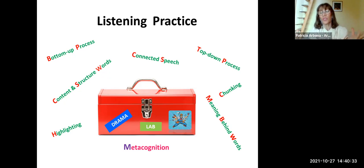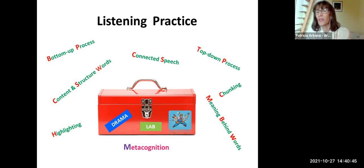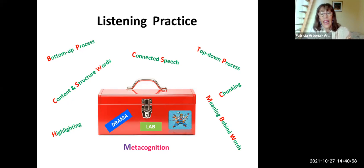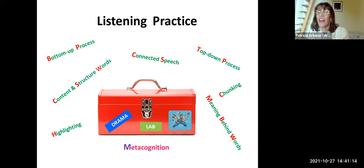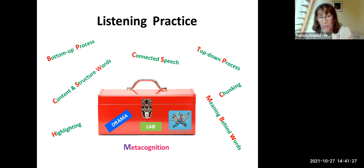When using drama, the classroom becomes a laboratory where students experiment with language — there is a lot of trial and error. Mistakes are welcome because students need to know it is not bad to commit mistakes; they are part of the process. When they recognize that mistakes are important, we use metacognition. When students are given metacognitive strategies, they discover they can assess their own process of learning, identify what is working and what is not, and improve their own learning. One of our most important aims is to help them become independent learners.